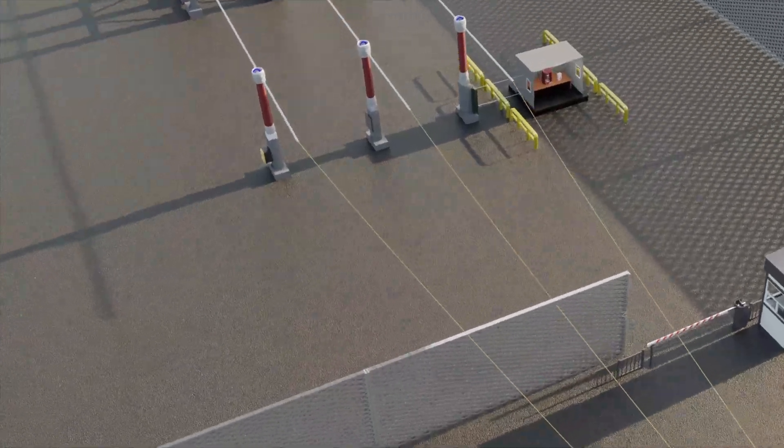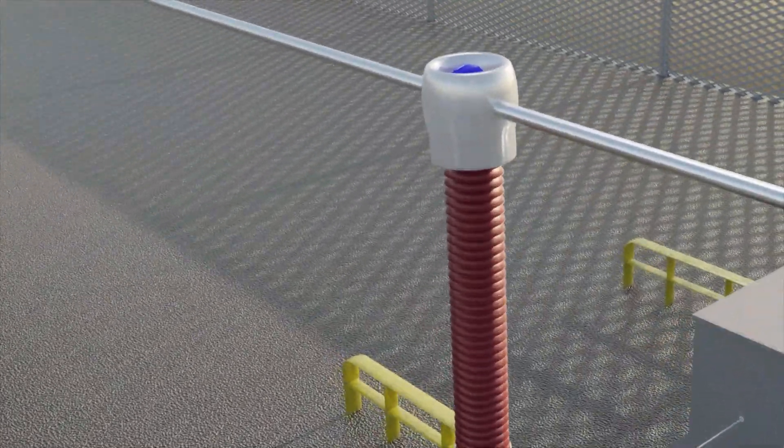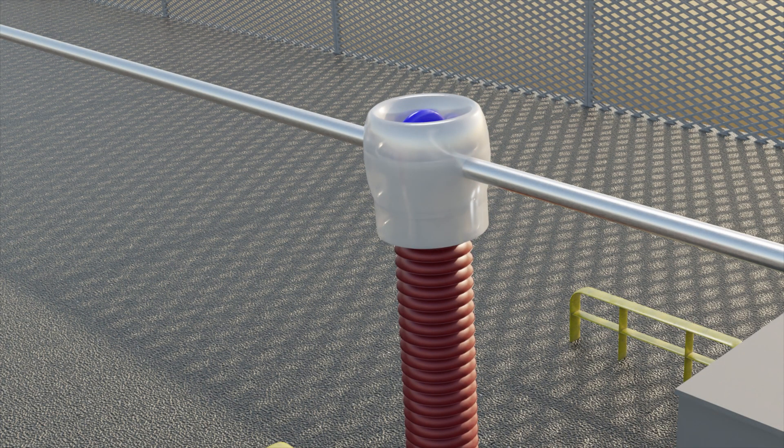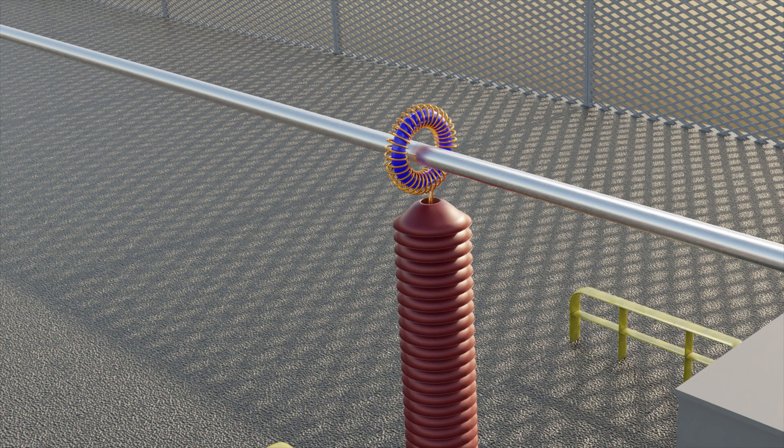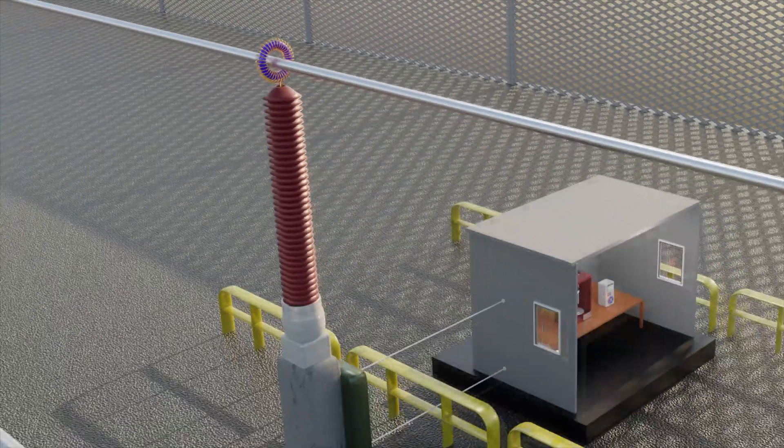The current transformer or CT has the ability to step down the current on the line to a proportionately lower level. This is absolutely necessary because the fault current is way too high to measure directly. Now the CT is very much like a standard transformer where the line current is the primary and we can construct a secondary with the number of turns we require to step down the current.